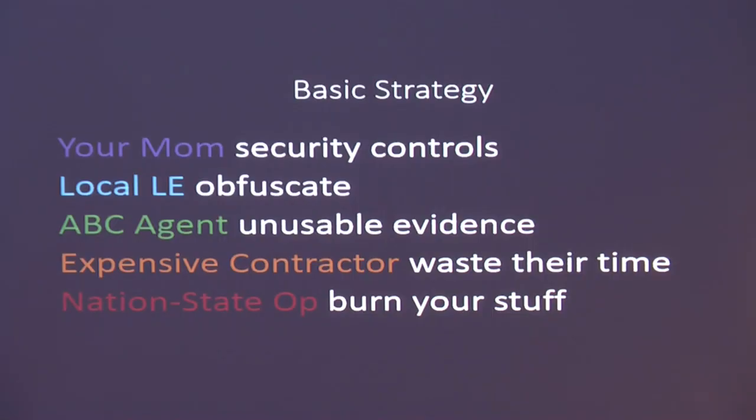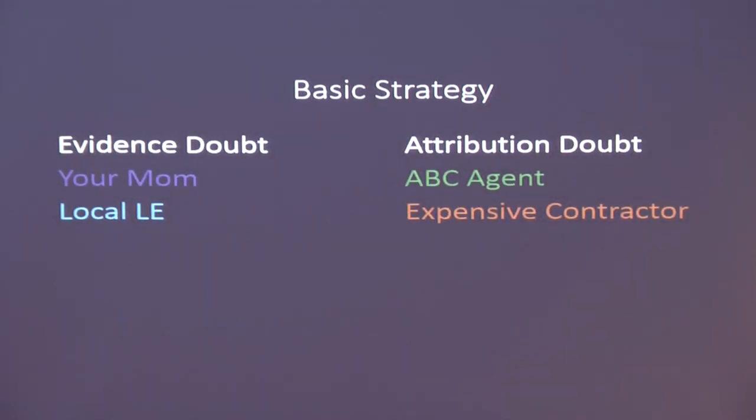For an expensive contractor, they're probably getting paid. When someone's being paid, someone else has to foot the bill. So the best thing to do is waste their time. Typically they put up an upfront retainer and say 'I'll do 20 hours of work for $20,000.' You want to waste their time. For nation-state — just burn your stuff, shred it, kill it with fire.